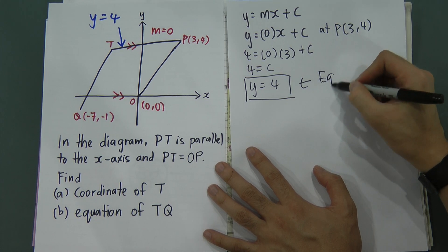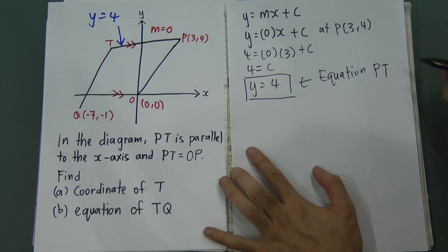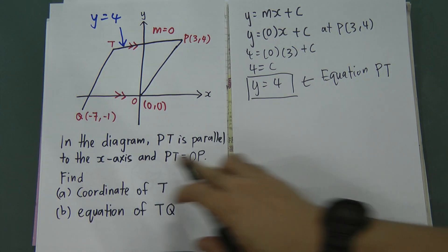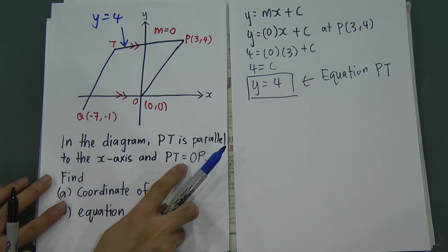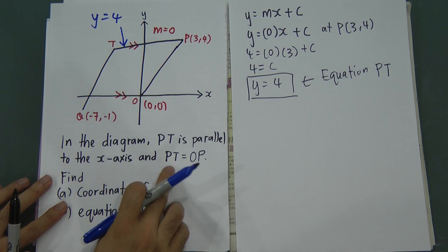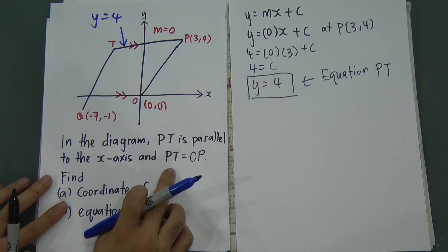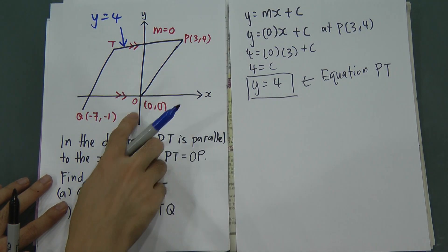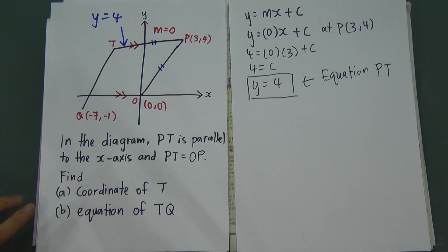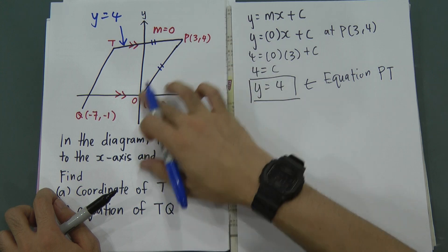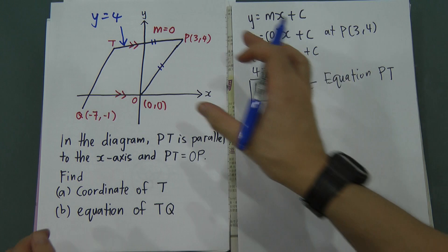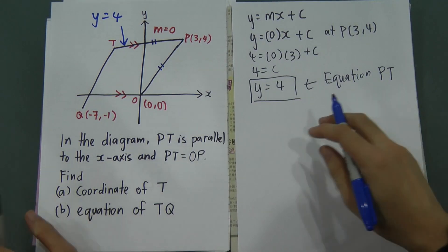That's the equation for PT. Now let's re-read the question. It tells us that PT has the same length as OP — these two lines have the same length. Part A asks us to find the coordinate of T. To find that, we need to know how long OP is.